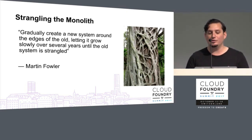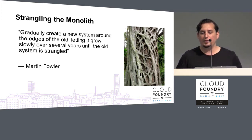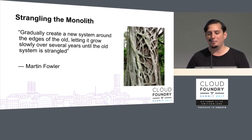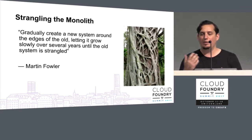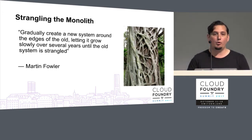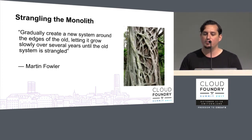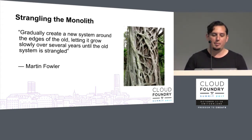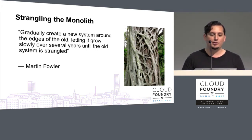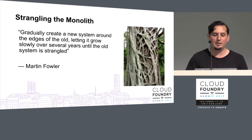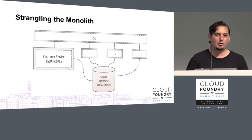There is another strategy called strangling the monolith, first proposed by Martin Fowler. Back around 2002, he went to Australia on vacation and saw a plant called a strangler vine. The strangler vine seeds itself in the upper branches of a fig tree and works its way down the trunk all the way to the root system, extracting the resources the tree is producing. It doesn't have to grow up from the forest floor. What Martin said is: gradually create a new system around the edges of the old, letting it grow slowly over several years until the old system is strangled. What you really need to do this is an indirection layer.